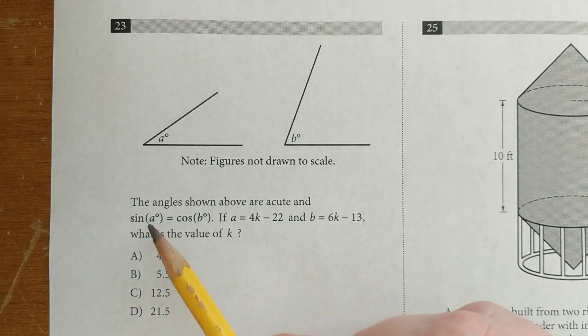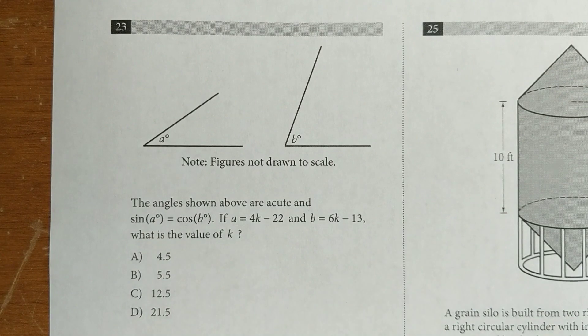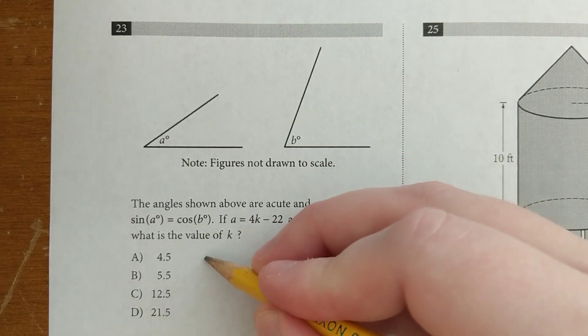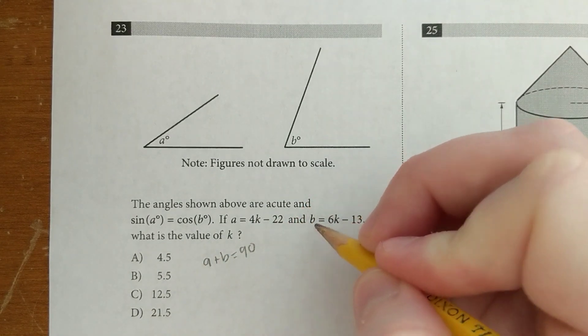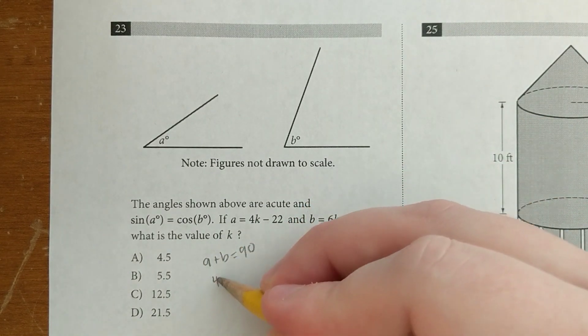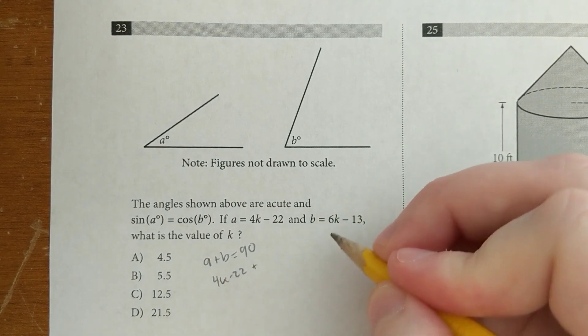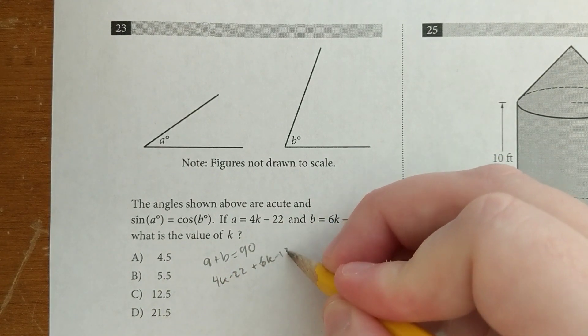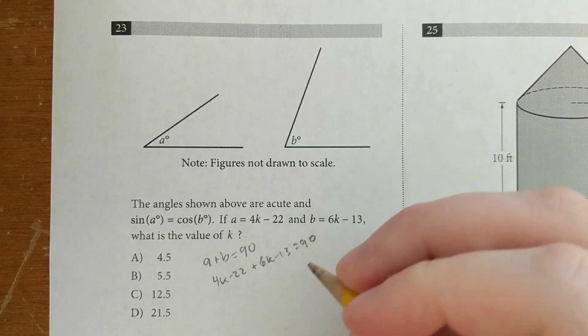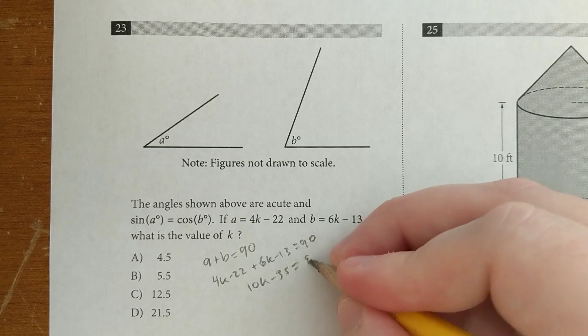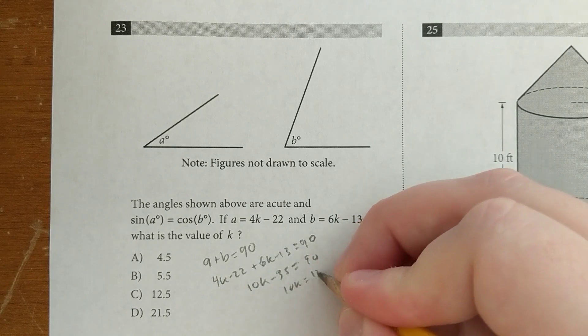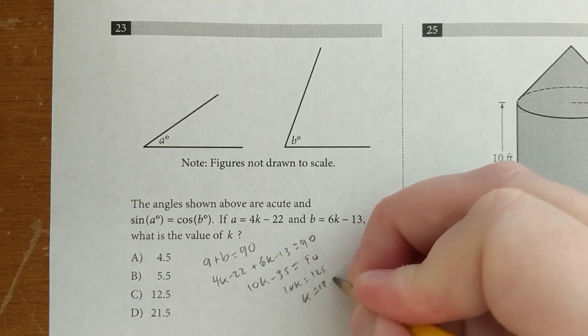So here, when you see that the sine of a equals the cosine of b, based on the other questions you've done, you'd think it must be that situation where a plus b equals 90. So you can just substitute here. a is 4k minus 22, and b is 6k minus 13. That all has to equal 90. 10k minus 35 equals 90. 10k equals 125. So k has to equal 12.5.